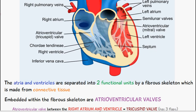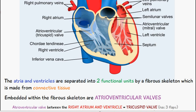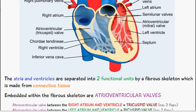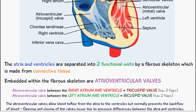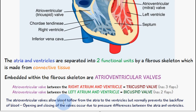The atrioventricular valve between the right atrium and ventricle is known as the tricuspid valve and has three flaps. On the left side, between the left atrium and ventricle, we have the bicuspid valve, also known as the mitral valve, which consists of two flaps. The atrioventricular valves allow blood to flow from the atria to the ventricles but normally prevent the backflow of blood.